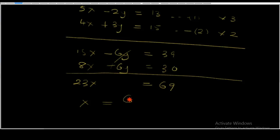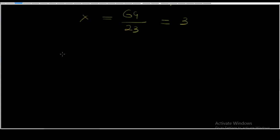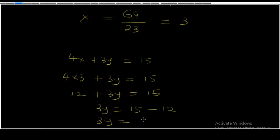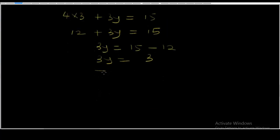23x is equal to 69. So x equals 69 over 23, therefore x equals 3. Let's substitute x equals 3 into equation 2: 4x plus 3y equals 15. So 4 times 3 plus 3y equals 15, giving 12 plus 3y equals 15. Then 3y equals 15 minus 12, so 3y equals 3. Dividing both sides by 3, y equals 1.